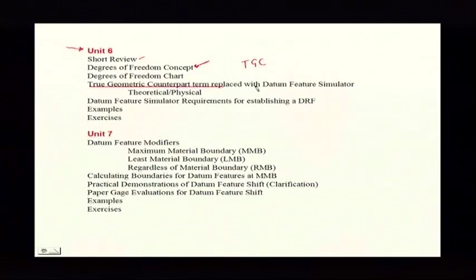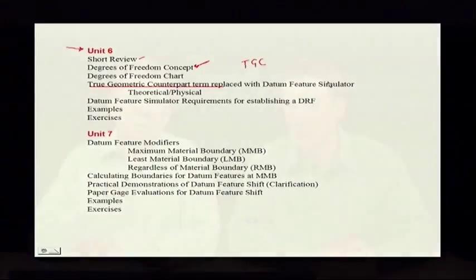It's been replaced with a term we call a datum feature simulator. There are now two kinds of simulators: a physical simulator and a theoretical simulator. The theoretical simulator is the way the engineer or designer thinks — everything is perfect. The physical simulator would be like the collet, the chuck, the surface plate, and so on. When the standard talks about a simulator, they're talking about that perfect one, and when you want to talk about the imperfect one, that one has tolerance. The engineer doesn't think in tolerance, so that's something new — the terminology changed a little bit.